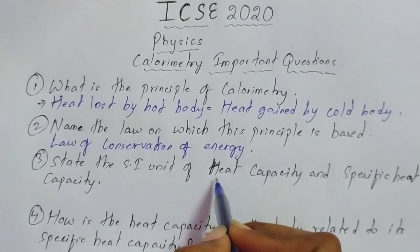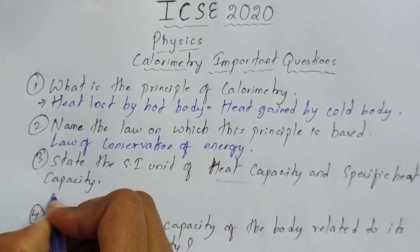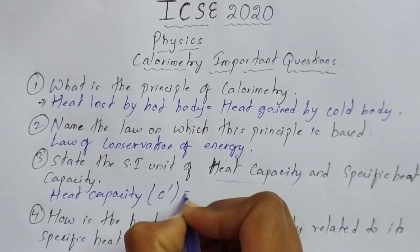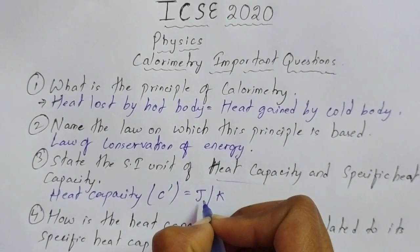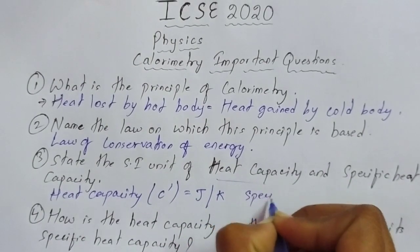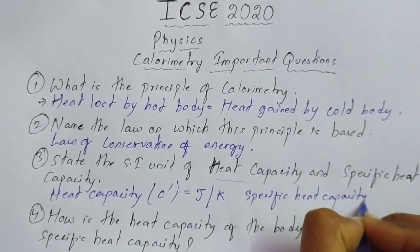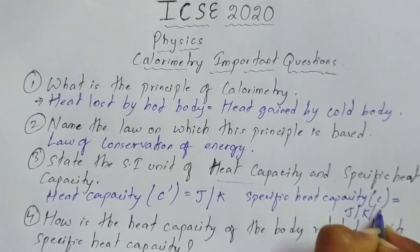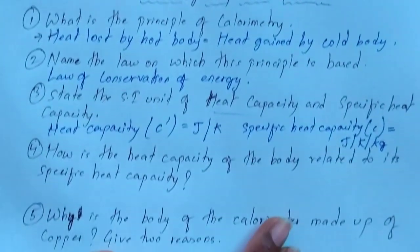Question number 3: state the SI unit of heat capacity and specific heat capacity. The SI unit of heat capacity, denoted by C dash, is joule per kelvin. The SI unit of specific heat capacity, denoted by C, is joule per kelvin per kilogram, which can also be written as joule kg⁻¹ kelvin⁻¹.